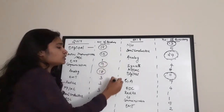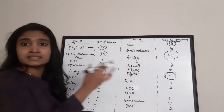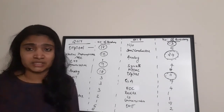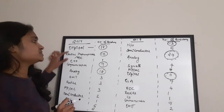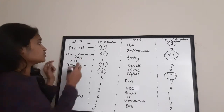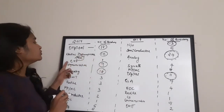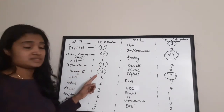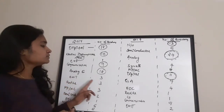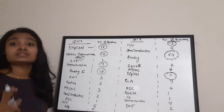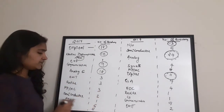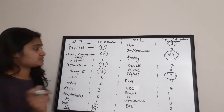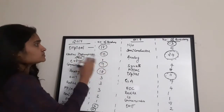Now let us see the number of questions asked from each subject for the 2017 Technical Assistant examination at VSSC. Digital Electronics: 18 questions; Electronic Instrumentation and ADC: 10 questions; C++: 1 question; Communication Systems: 9 questions; Analog Electronics: 18 questions; EMT: 3; Radar: 3; Microprocessor/Microcontroller: 3; Semiconductor Theory and Material Science: 2; EDC: 1; Network: 6; General Aptitude: 6 questions.